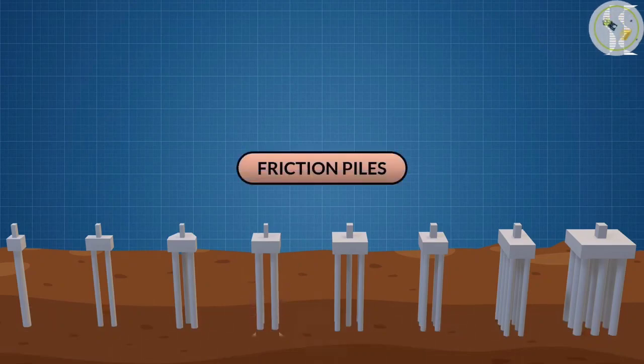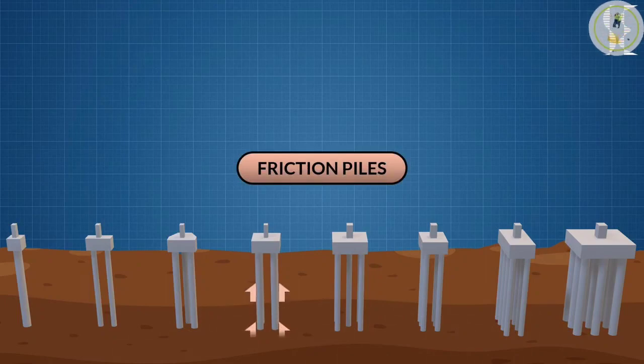Friction piles are piles that rely on the friction between the surface of the pile and the surrounding soil to support the load. They are usually driven or bored into the ground to a depth that is sufficient to mobilize enough friction. The length and diameter of the pile depend on the load and the friction angle of the soil. Friction piles are suitable for sites where there is no distinct bearing layer or where it is too deep or too weak and where the upper layers have some frictional strength.